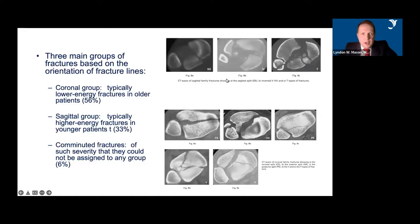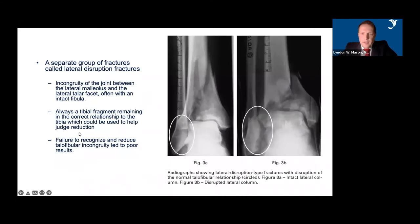They also found three main groups of fractures based on the orientation of the fracture lines: the coronal group, which are typically lower energy fractures on the top row; the sagittal group, which are typically higher energy fractures in younger patients; and then the comminuted fractures of such severity that you couldn't really assign them to either group. A separate group was noted where you had an intact fibula with incongruity of the joint from the lateral malleolus and lateral talar facet — these did very badly if not recognised.